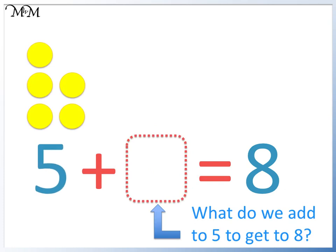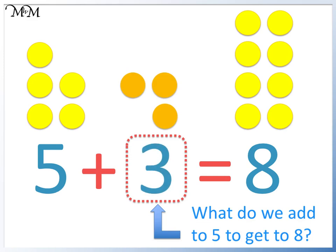Here is 5 and here is 8. We can count on 1, 2, 3, 4, 5, then 6, 7, 8. We have added 3. We could have also found this answer by doing 8 subtract 5.